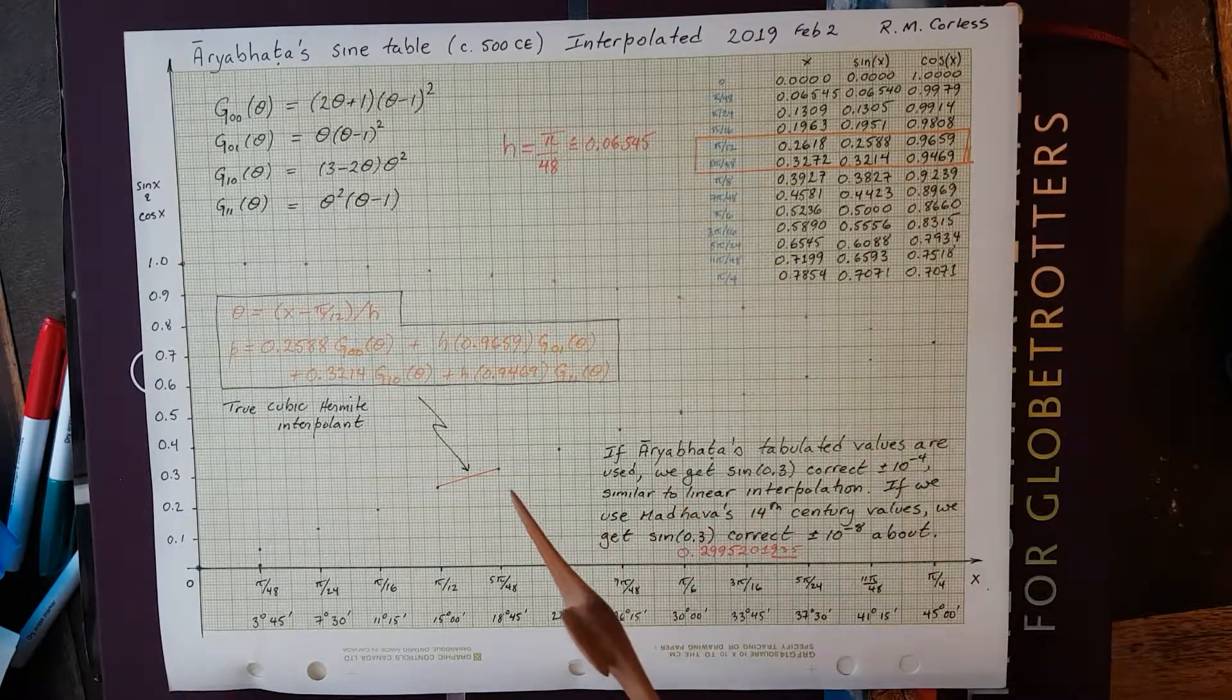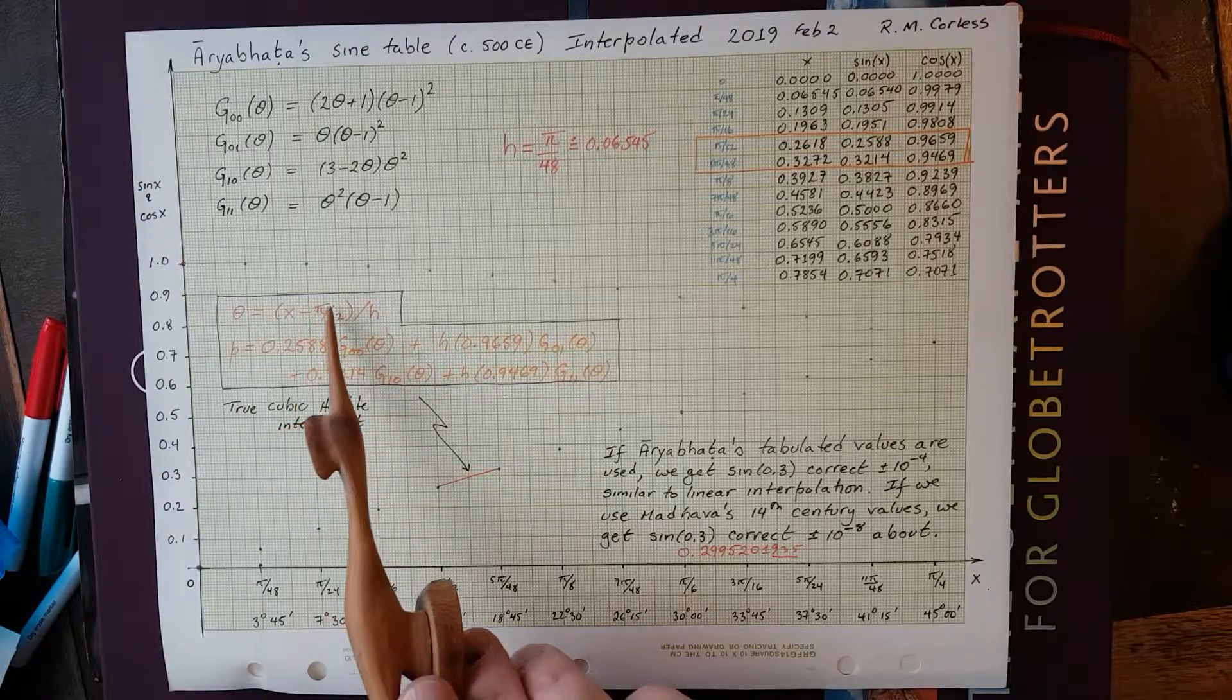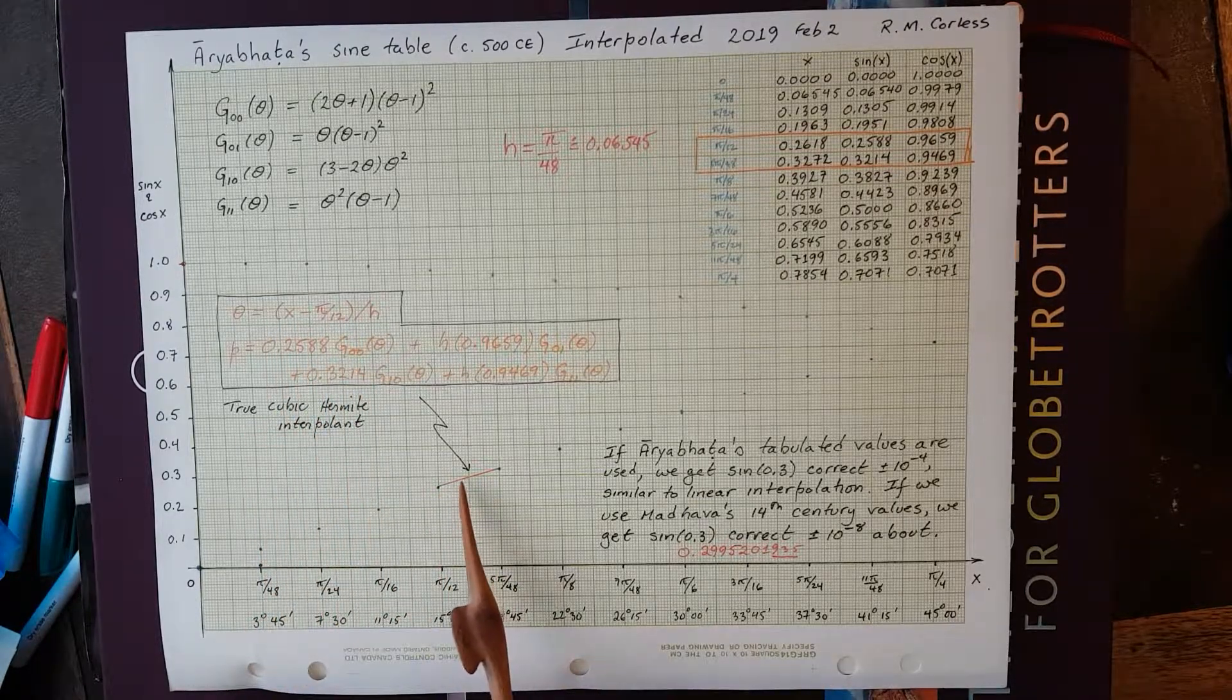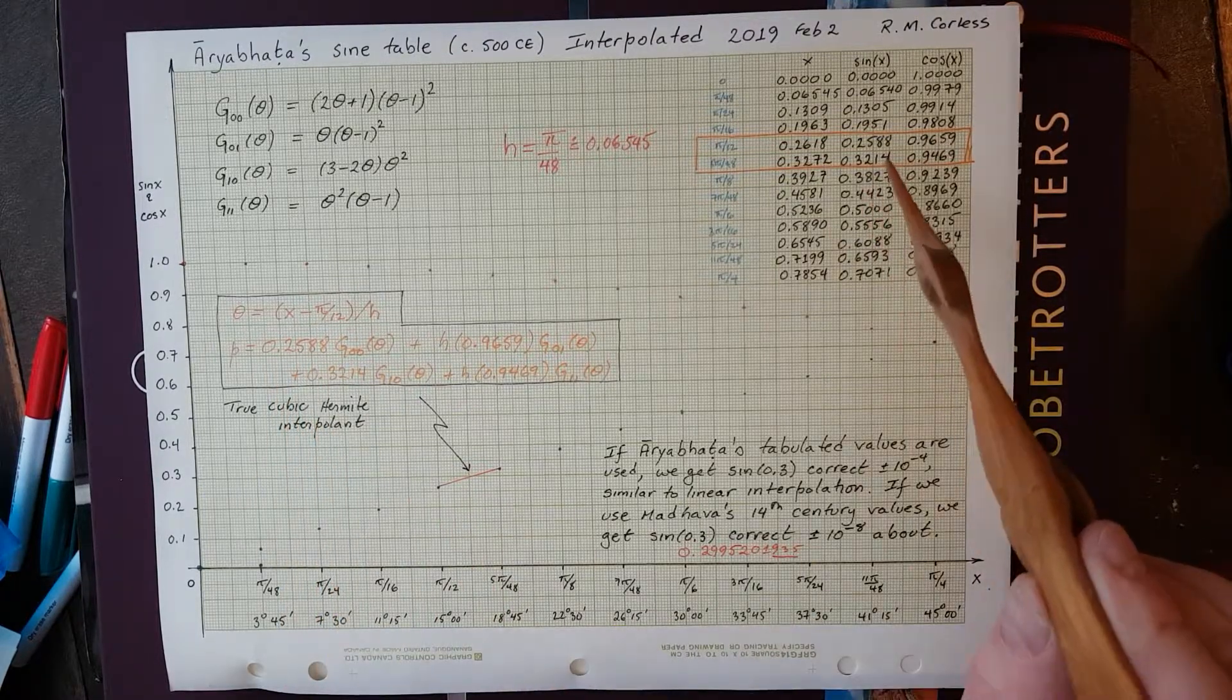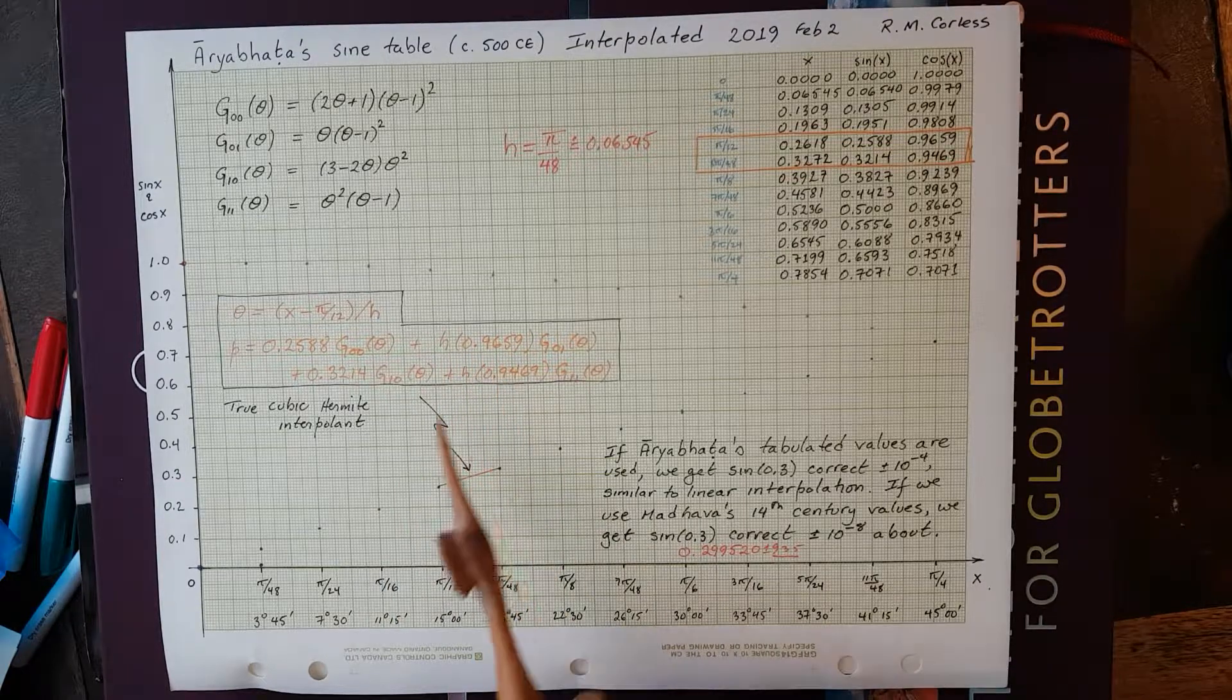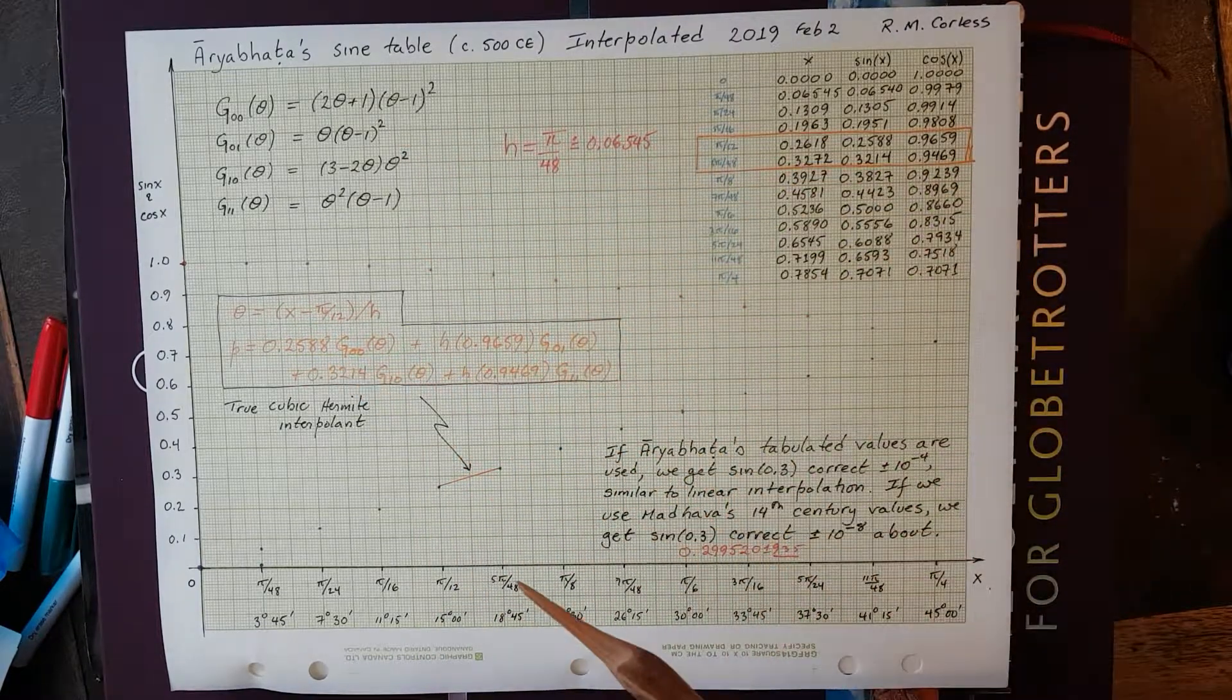So, our formula from the last time said that sine of x was going to be the value of the function times g0,0 of theta, where theta was x minus the left endpoint divided by the width h. So, that's a non-dimensional representation of how far along in this interval we are. So, 0.2588, that's the first function value, that's the sine at the left end, 0.2588, plus h times the derivative at that value, that's 0.9659, times g0,1, so that's this one. So, those two go in together that way.